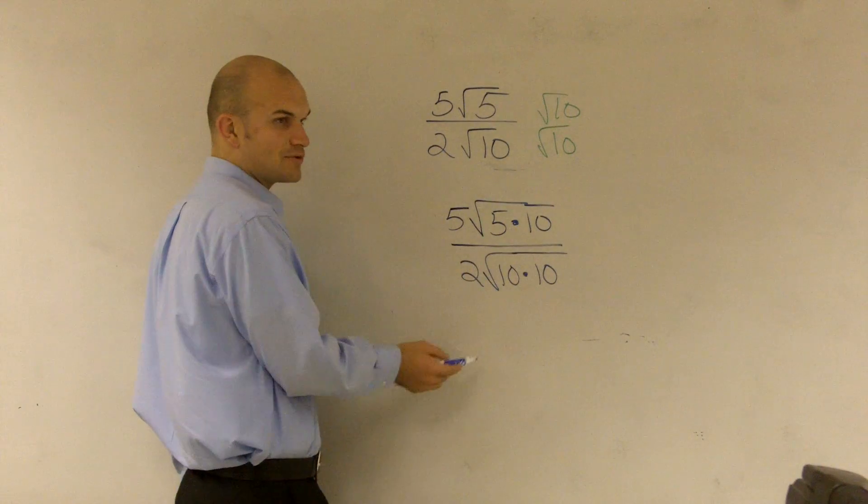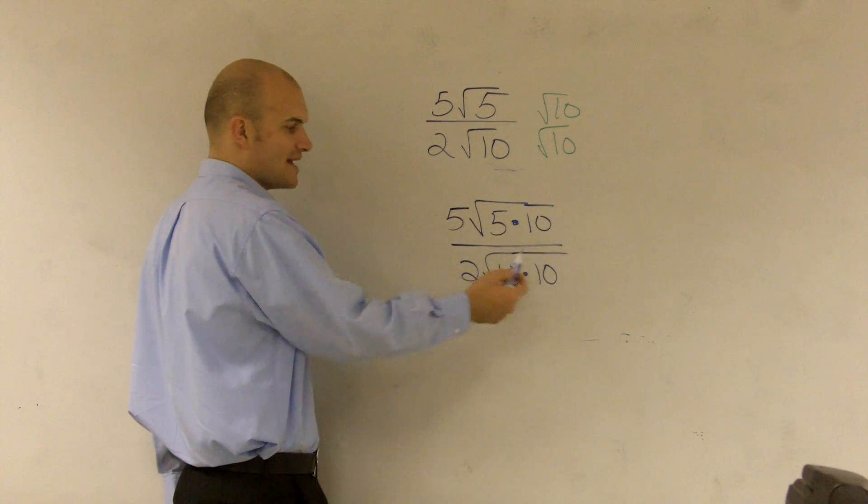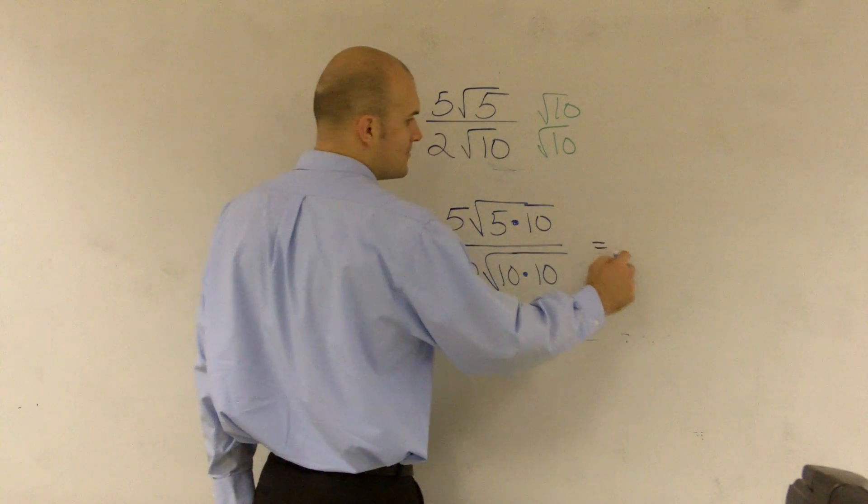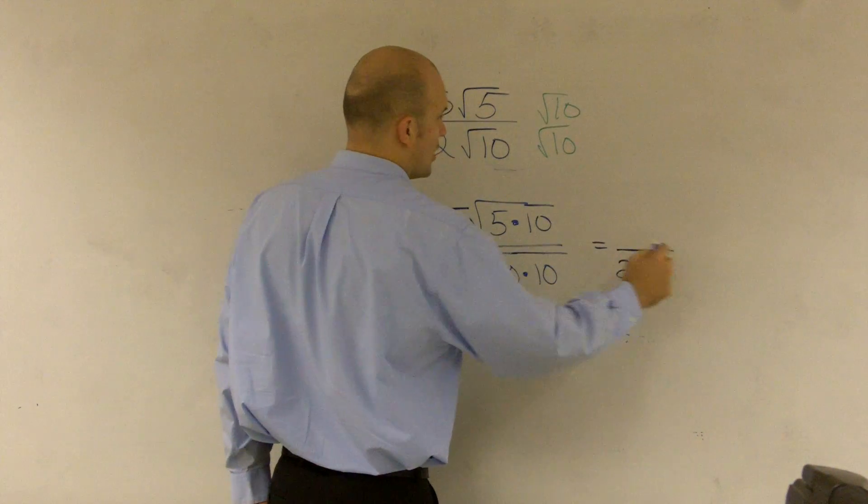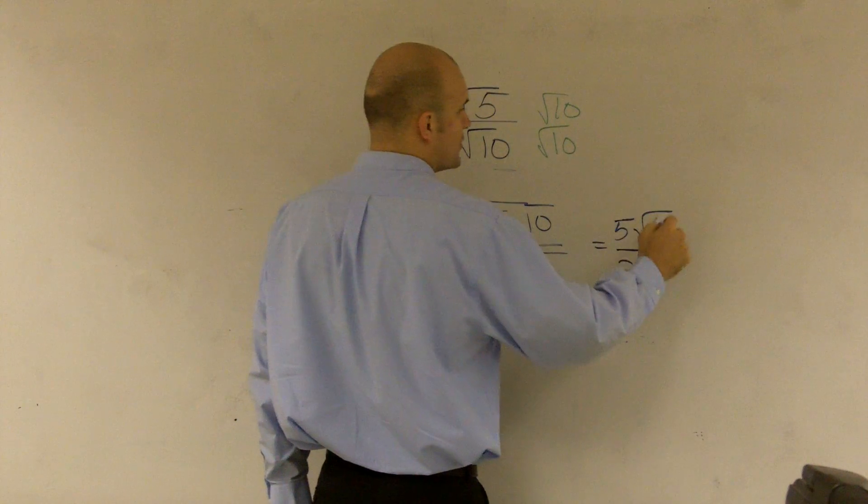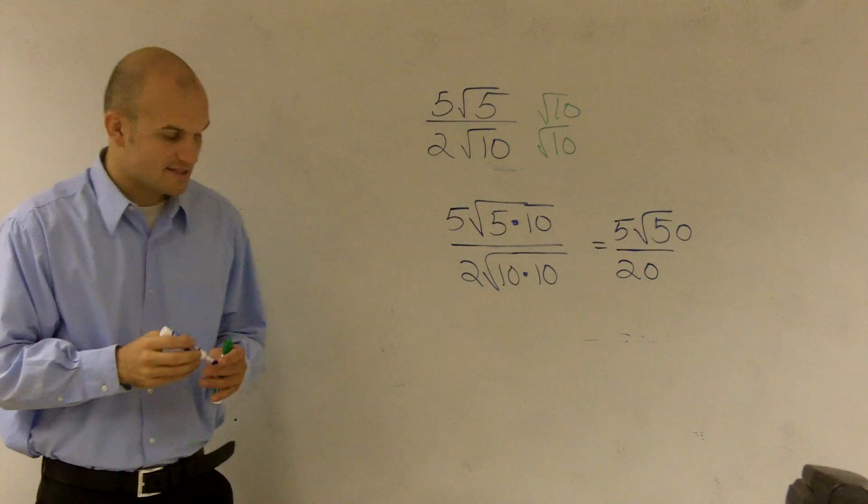Well, square root of 10 times 10 is 100. Square root of that is 10. So therefore, I'm going to get 20 on the bottom all over 5 times square root of 50.